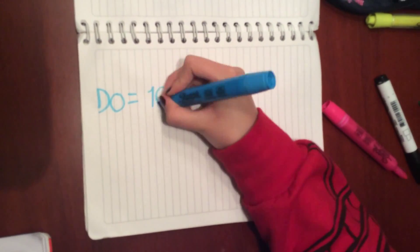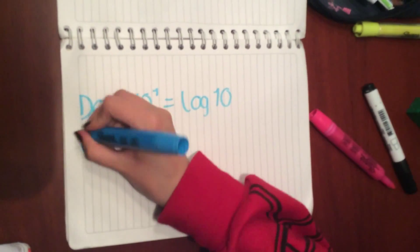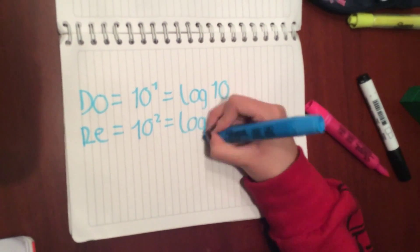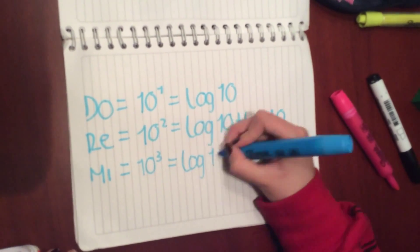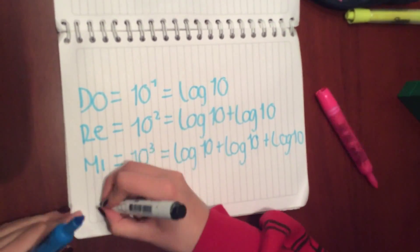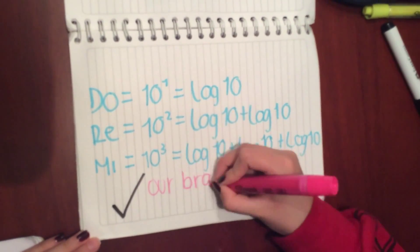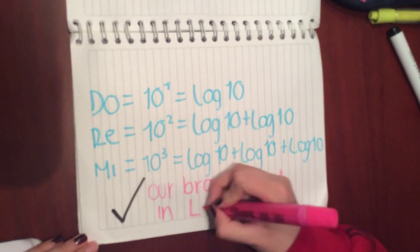We can also think of this as if our brains are thinking in logarithms. 10 to the 1 being log 10, 10 to the 2 being log 10 plus log 10, 10 to the 3 being log 10 plus log 10 plus log 10. So, in conclusion, our brains are actually thinking in logs.